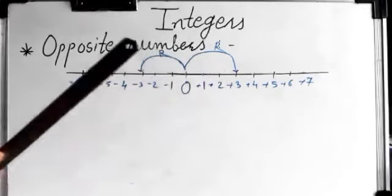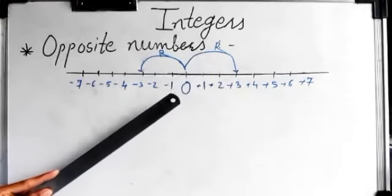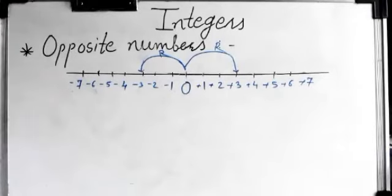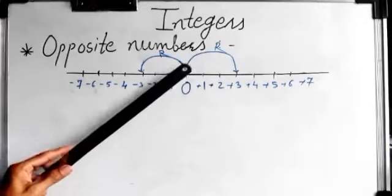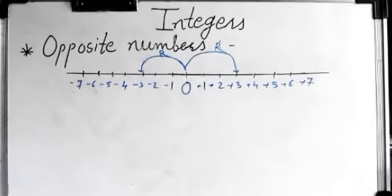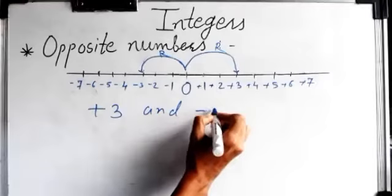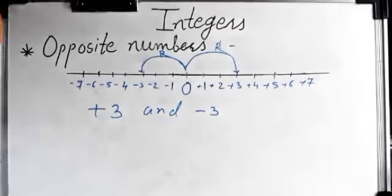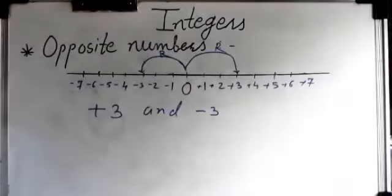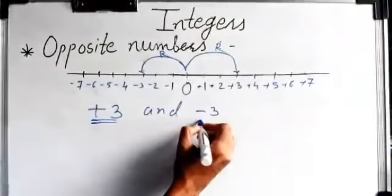When the same rabbit jumps three units to its left side, it reaches minus three. Both distances from zero are equal — three units to the right, and three units to the left. Only the directions were opposite. So plus three and minus three are opposite numbers.